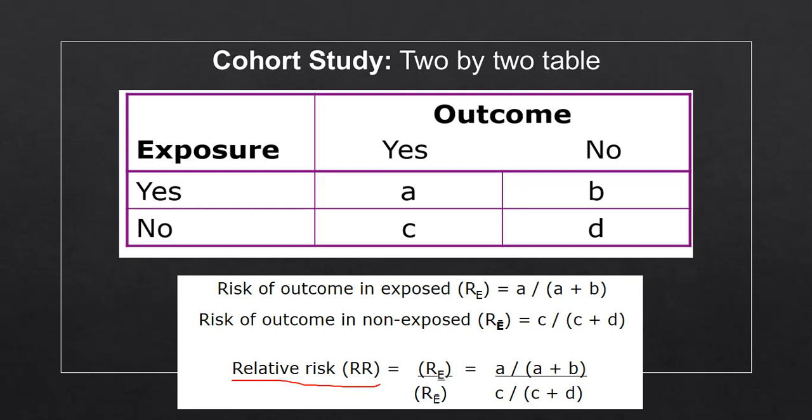So you finish your research and your study. And in the end, you get essentially these four numbers here. And these A, B, C, D are essentially just numbers. So how many people?